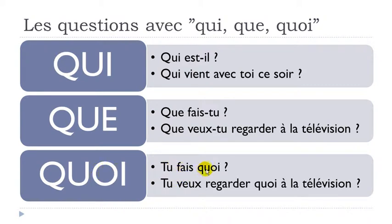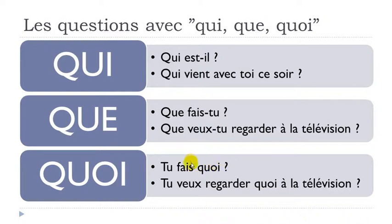With QUOI, you don't start the question with it — you put it at the end. For example: Tu fais quoi? It has exactly the same meaning as Que fais-tu? — but you keep the normal subject-verb word order. When using QUOI at the end, you definitely need to raise your voice. Tu fais quoi? And: Tu veux regarder quoi à la télévision?